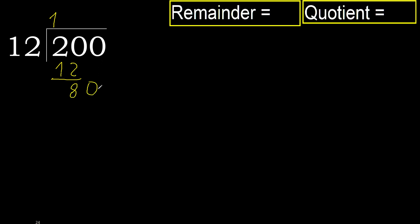80 and 12: multiply by 7 — 84 is greater. Multiply by 6 — 72 is not greater. Ok, subtract.